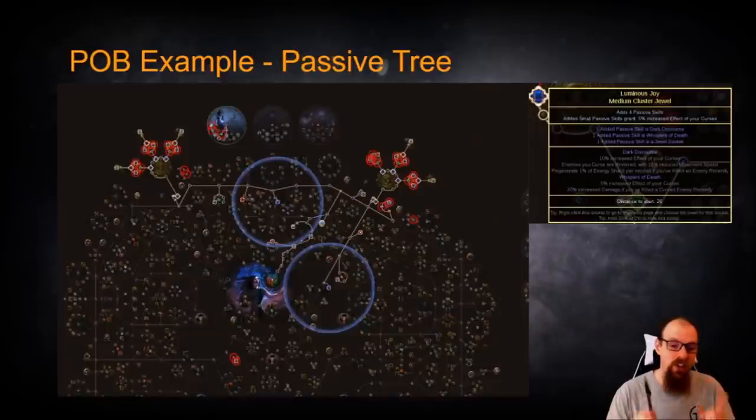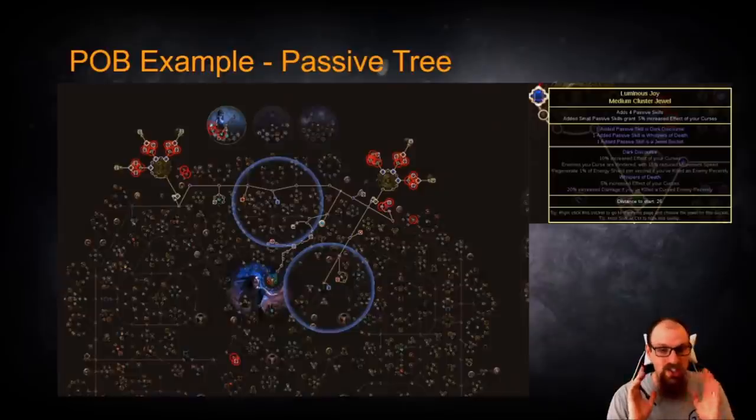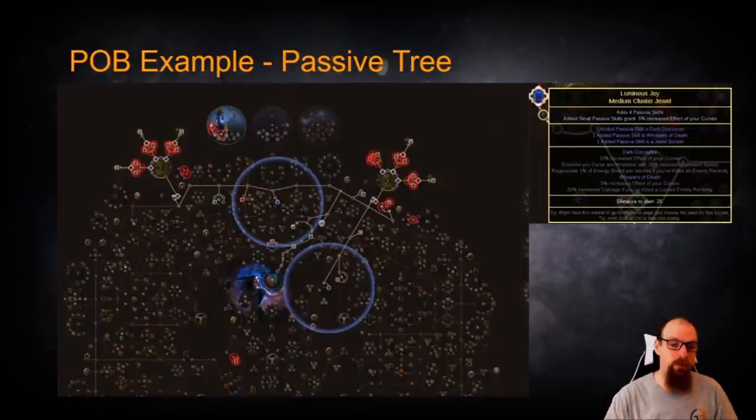you can actually notice on this particular passive tree that I've got pulled up, which is now using two unique Voices, which are seven passive Voices, so they're the cheapest Voices out there, we are not even grabbing the 5% Minor Notables that are on the way towards Whispers of Doom. Instead,